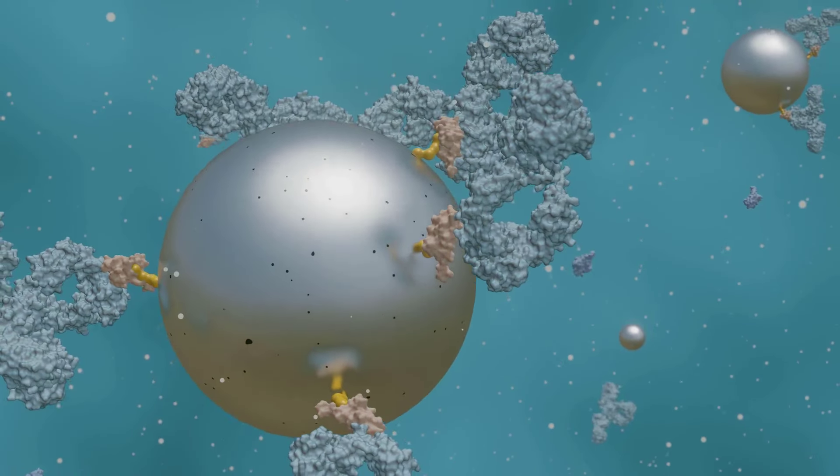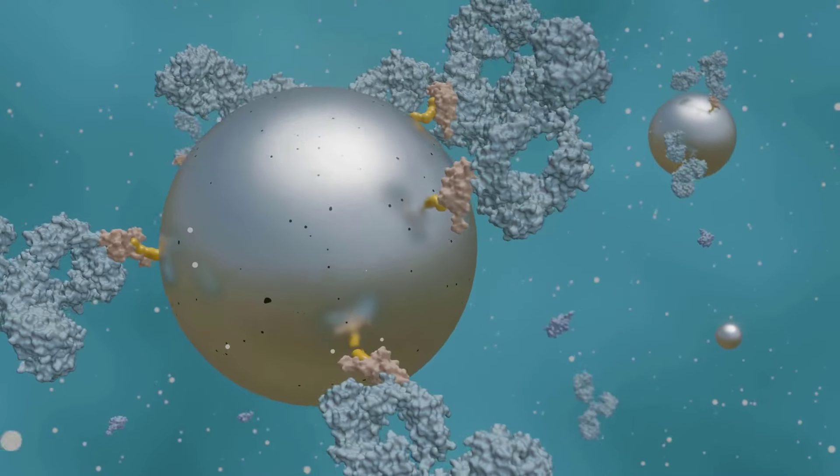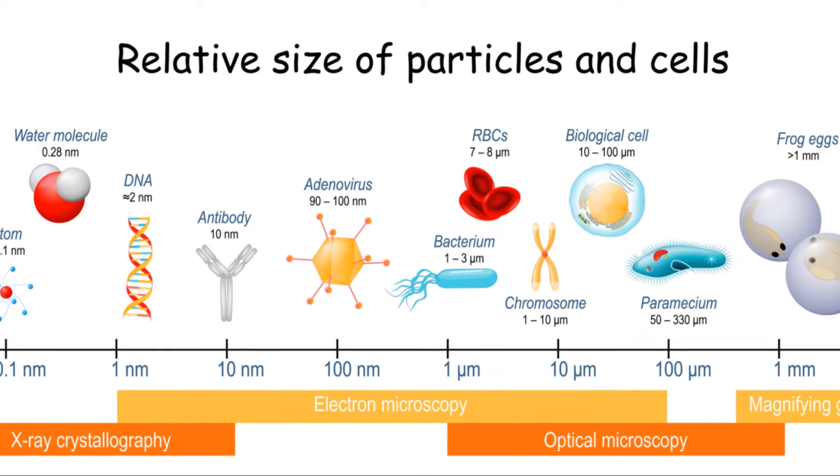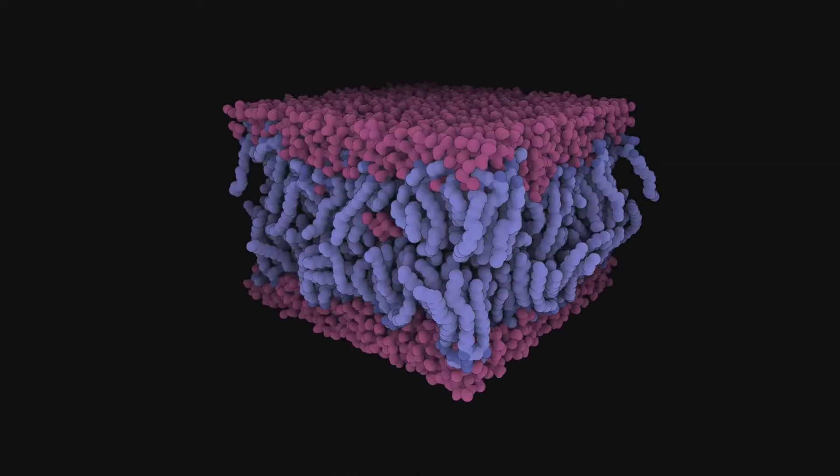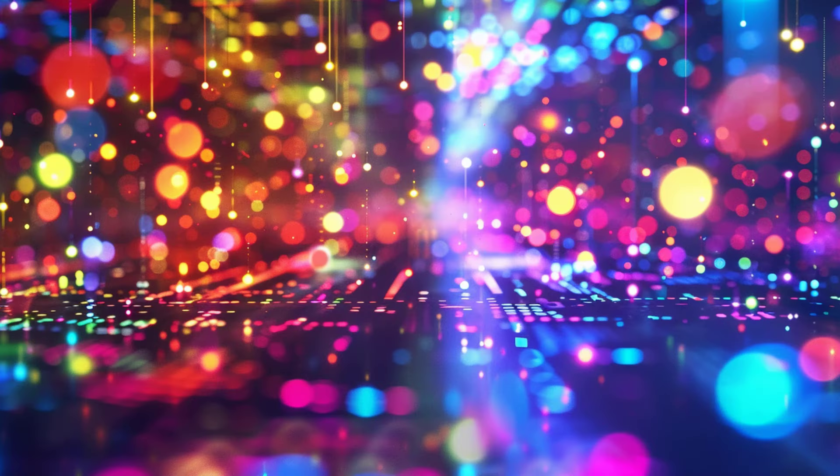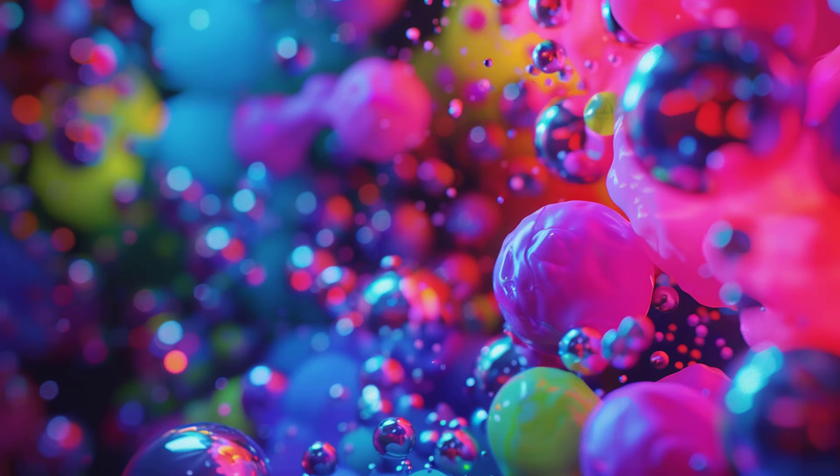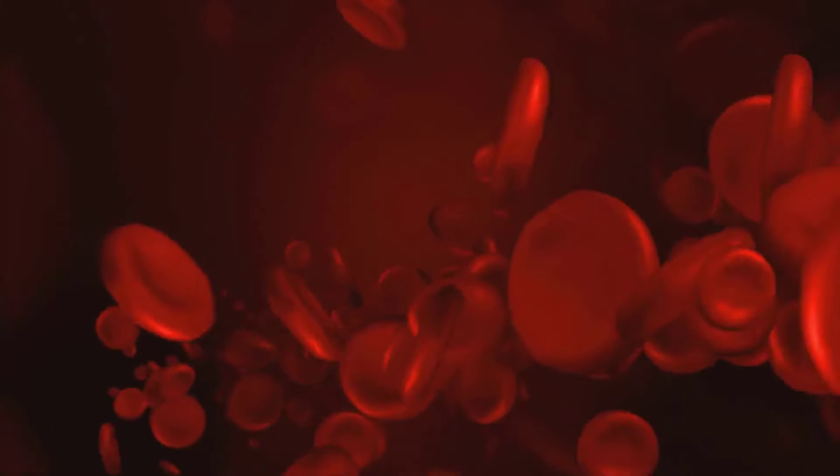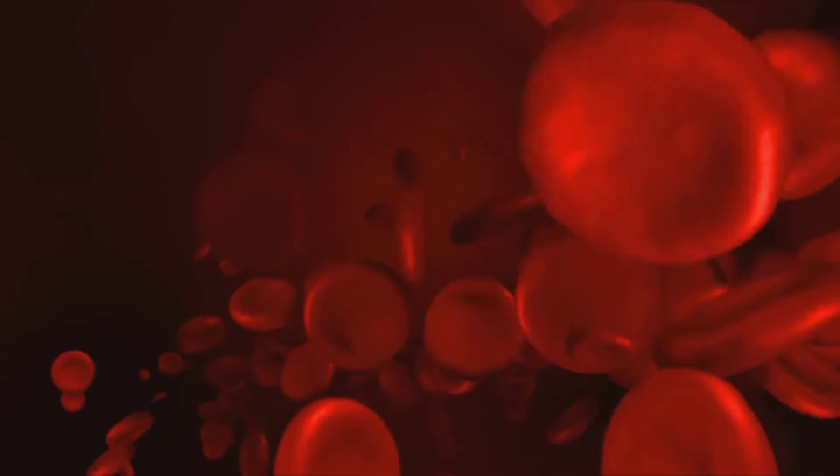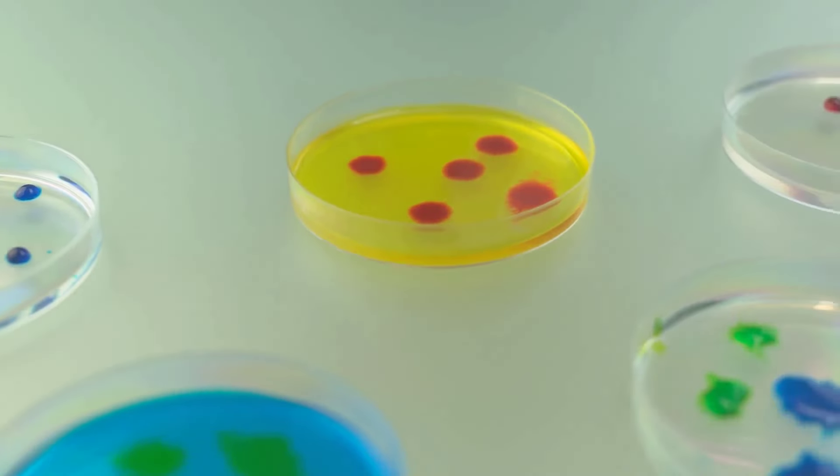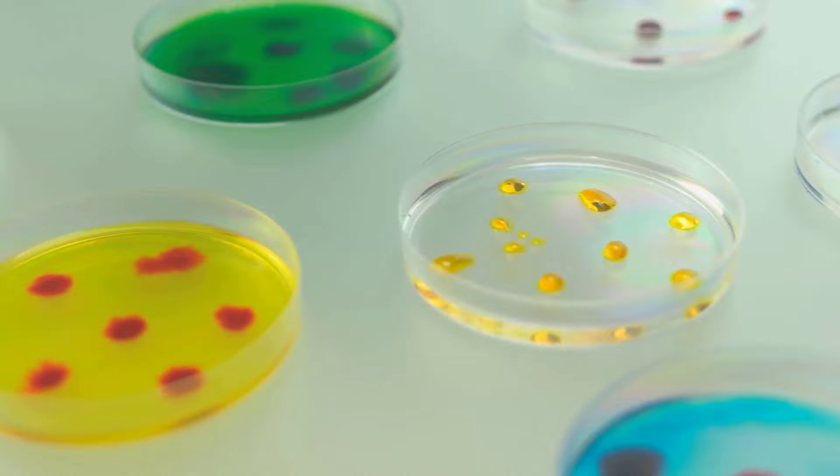For starters, nanoparticles can be absorbed by living cells, a process known as cellular uptake. This cellular uptake depends on various factors such as size, shape, and surface charge of the nanoparticles. For instance, smaller nanoparticles can pass through cell membranes more easily than their larger counterparts. Once inside the body, nanoparticles don't just stay put. They're distributed throughout the body in a process called biodistribution, traveling through the bloodstream and potentially reaching every organ. The biodistribution pattern of nanoparticles is influenced by their physico-chemical properties and can be manipulated to target specific tissues or organs.